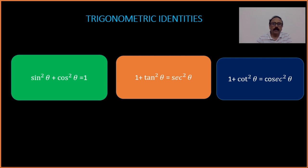But in the case of an identity, if you take any value of theta, it will be satisfied. For example, in the case of sin²θ + cos²θ = 1, you may take 0° or you may take 90° — from 0° to 90°, it will be satisfied for each and every value of theta.